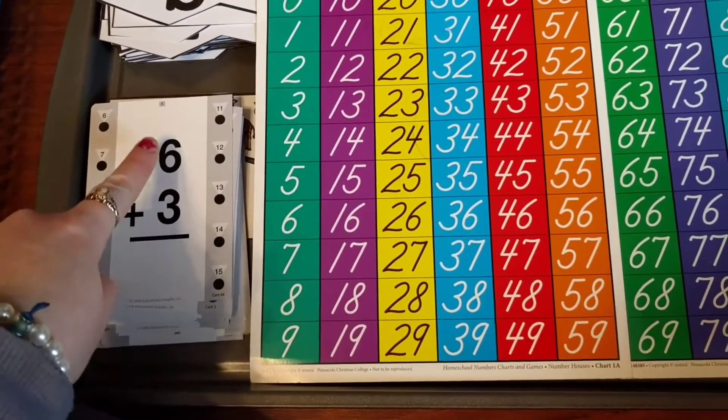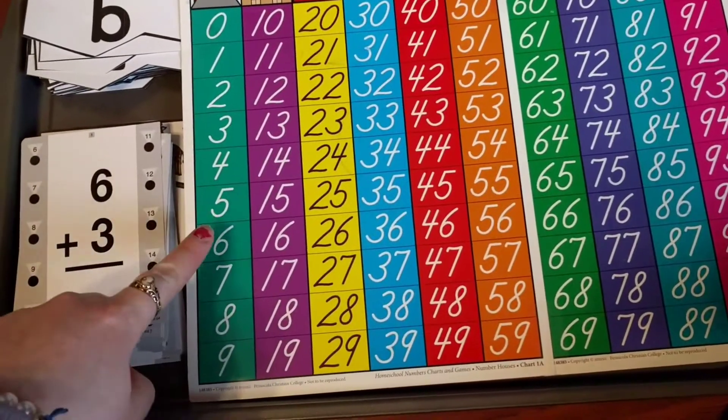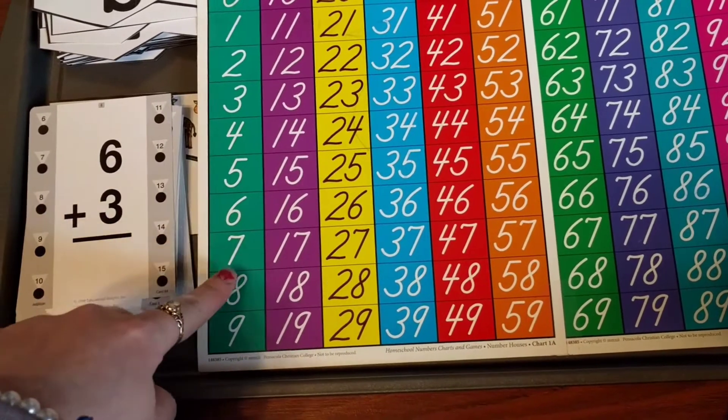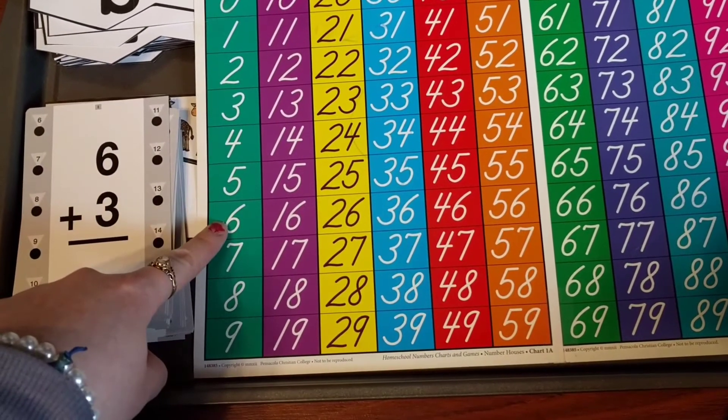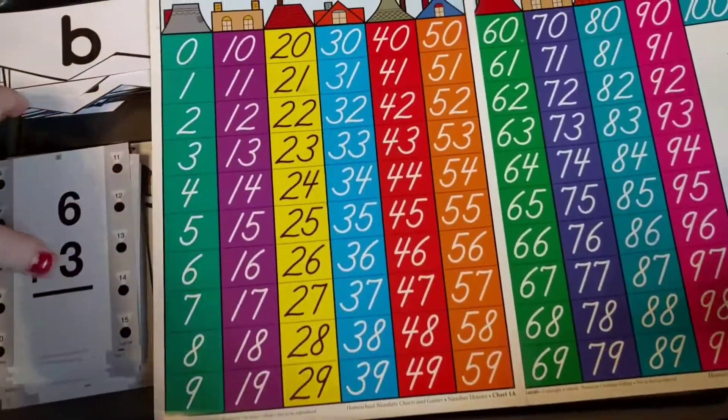All right, let's say we're doing 6 plus 3. So you tell the child, find 6 on your chart, because we already know we have 6. So they're going to find 6. Then we're just going to count 3 more: 7, 8, 9. So my answer is 9. I already know I have 6, count 3 more. So you can use a chart, which is a lot of fun.